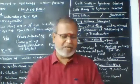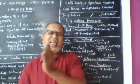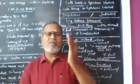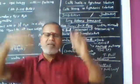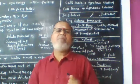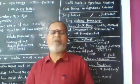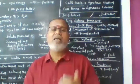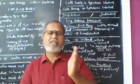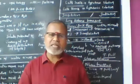Transpiration plays a very important role. Loss of water in vapor form through the aerial parts of the plant is called transpiration. If it takes place through stomata, it is stomatal transpiration. If it takes place through the cuticle, it is cuticular transpiration.